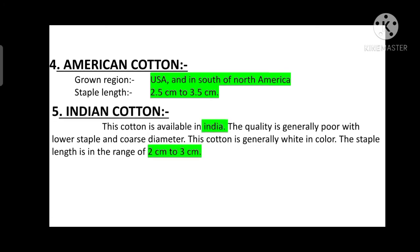The fifth one is Indian cotton. This cotton is available in India. The quality is generally poor with lower staple and coarse diameter. This cotton is generally white in color. The staple length is in the range of 2.5 cm to 3.5 cm.